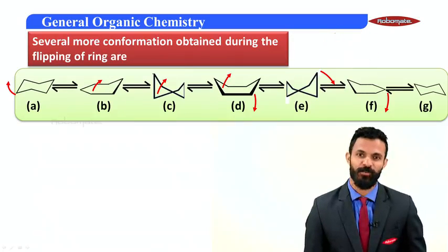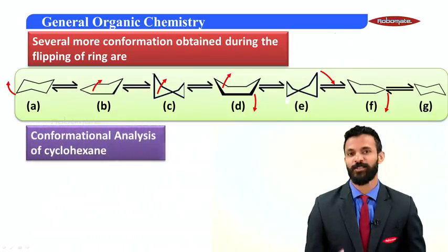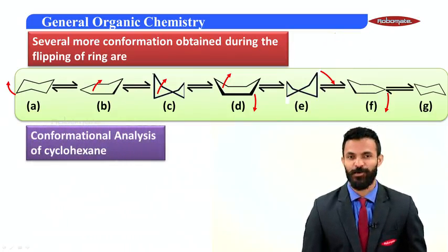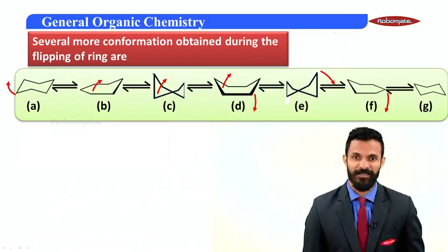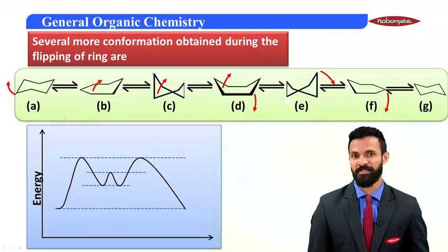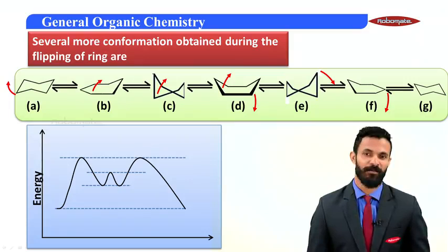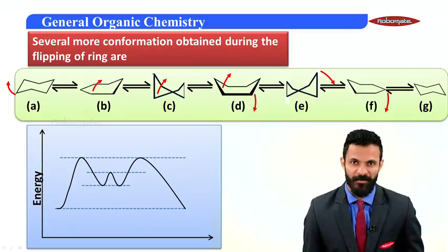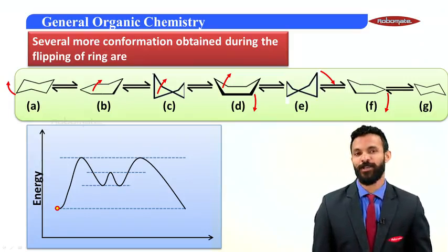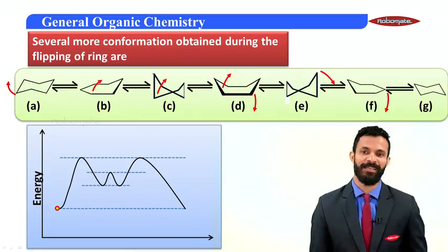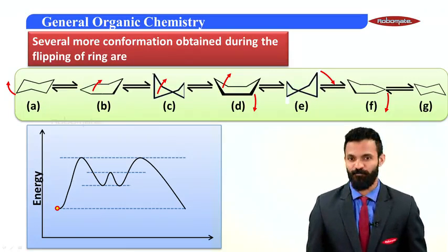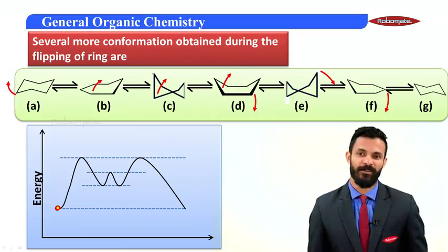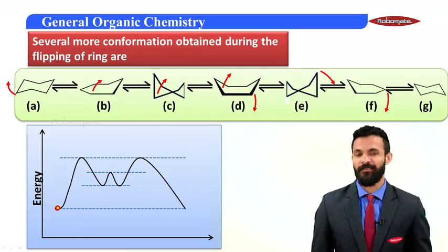If we study the energy changes taking place during this flipping of the chair conformation, the graphical representation that we get is what we simply call the conformational analysis of cyclohexane. The chair conformation is the most stable, hence the least energetic.